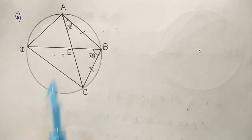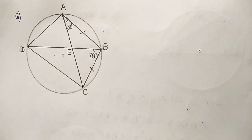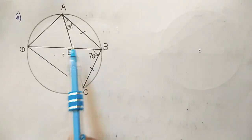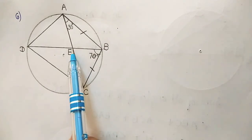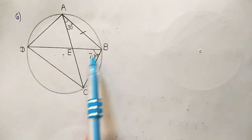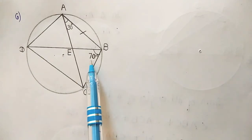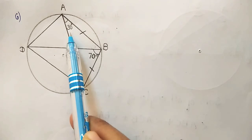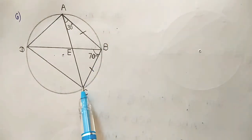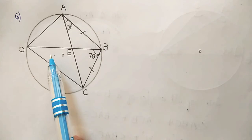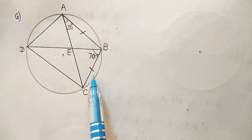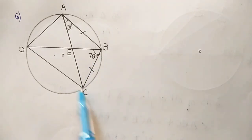Question number 6. ABCD is a cyclic quadrilateral whose diagonals AC and BD intersect at point E. If angle DBC is 70 degrees and angle BAC is 30 degrees, find angle BCD. Further, if AB equals BC, find angle ECD.